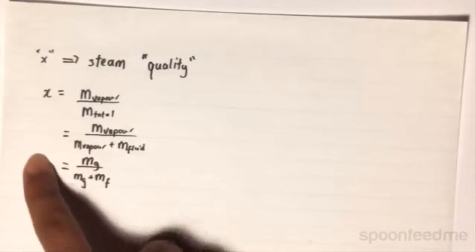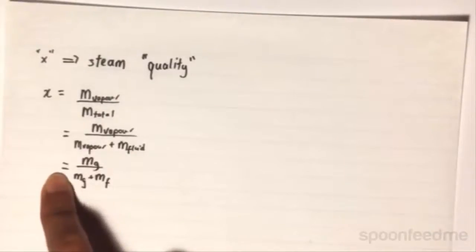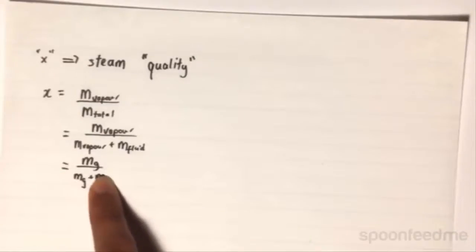And so, therefore, we have this relation here, where this steam quality is equal to the mass of the gas over the mass of the gas plus mass of the fluid, where the subscripts G and F denote the gaseous and fluid states, respectively.